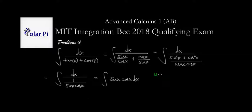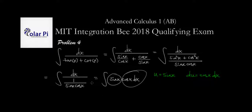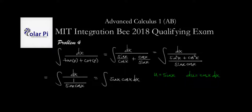So we let u equal sine x, and then that would mean that du is equal to cosine x dx. How lucky are we? Because that would mean that this is u and this is exactly du — right there, du and u. So our integral now changes to simply the integral of u du, and that's easy enough to integrate. We know that that is one half u squared plus C.